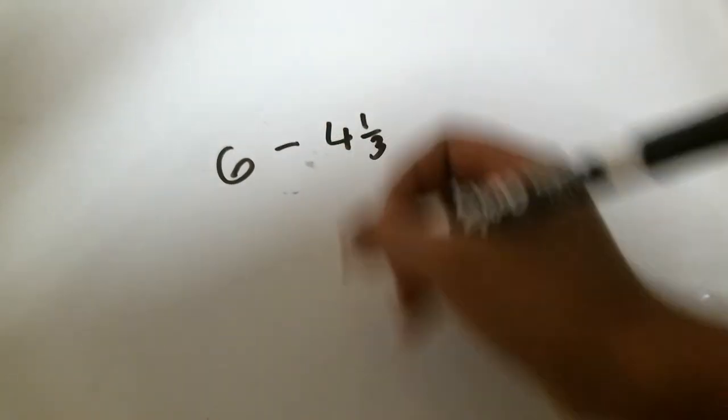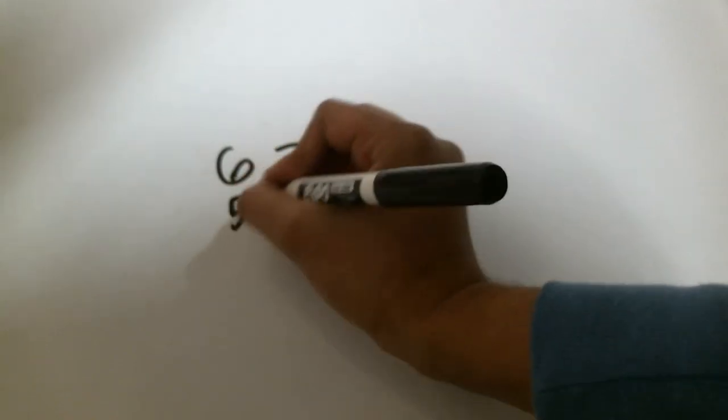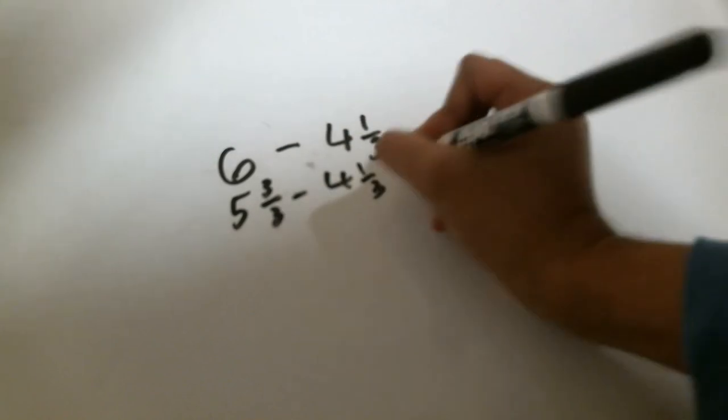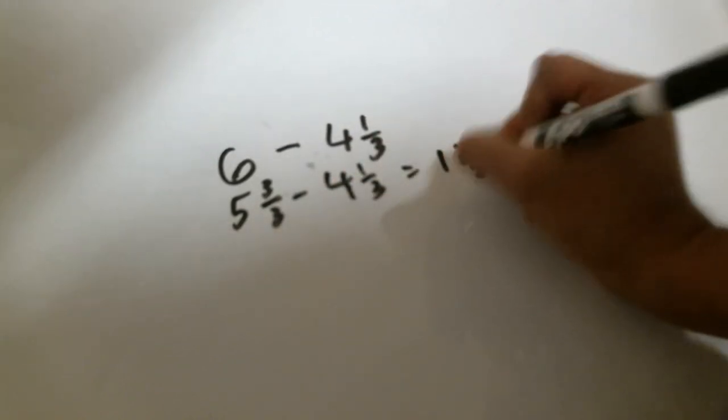so 6 subtracted by 4 and 1/3. And eventually what I'm going to do is I'm going to extract 1 so far, so we'll find 3/3 minus 4 and 1/3.